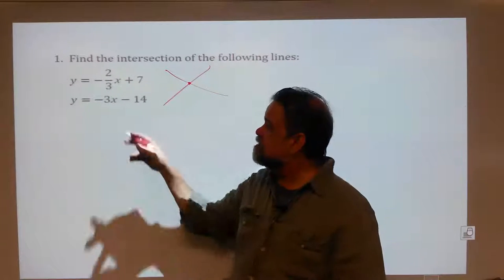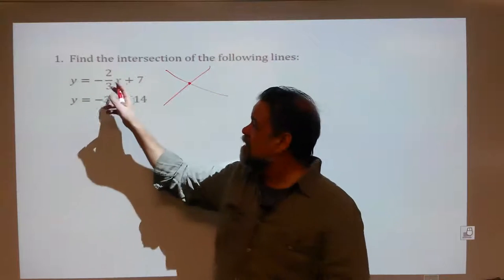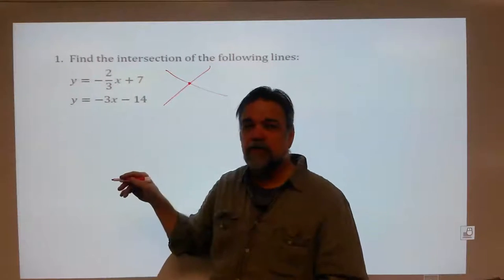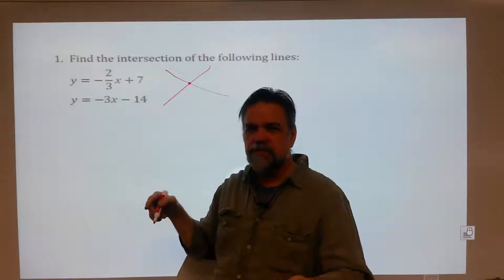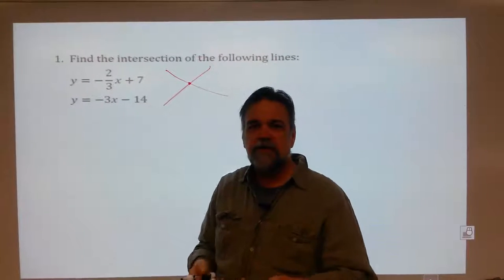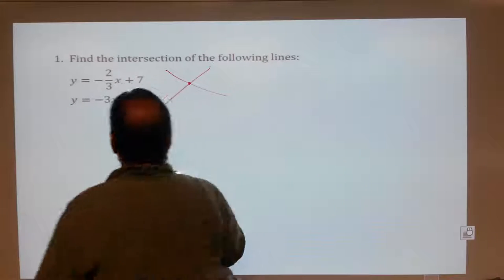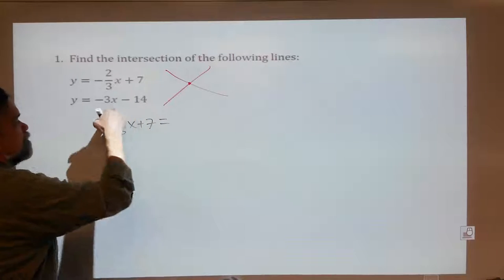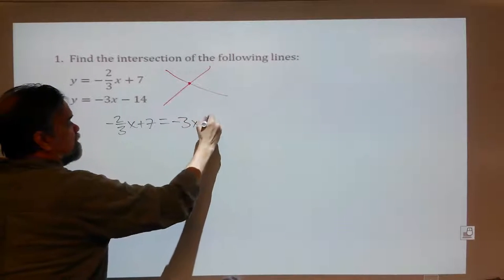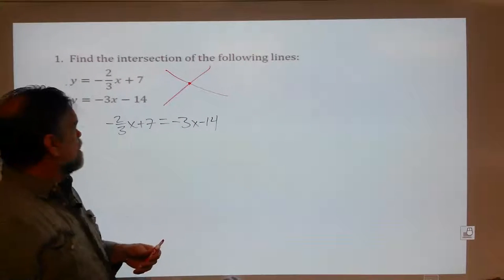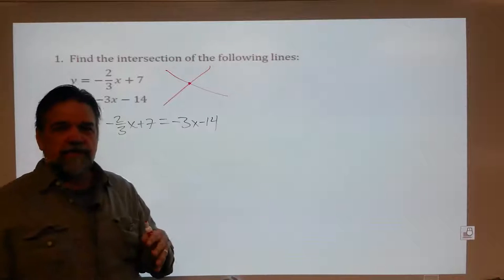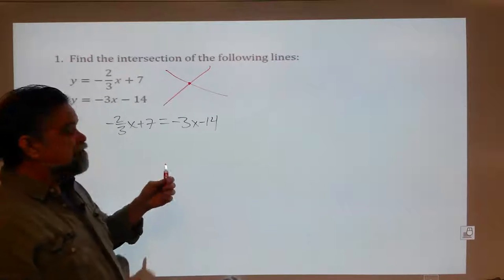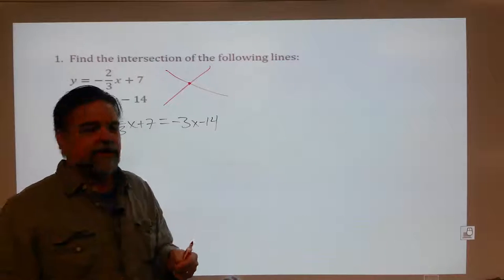What we can do is say: if this equals the y-coordinate and this also equals the y-coordinate, then they must equal each other. Just think about it for a second. So if they equal each other, then we can write negative two-thirds x plus seven equals negative three x minus fourteen. Now we have an equation with just one unknown, and we know how to solve those.